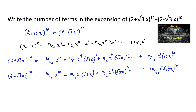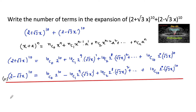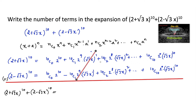Now adding these two expressions, (2 + √3x)^10 + (2 - √3x)^10, we can cancel the terms which are positive and negative. So the odd terms get cancelled, and we will be having only the even terms: 10C0·2^10 + 10C0·2^10, that is 2 times those even terms.